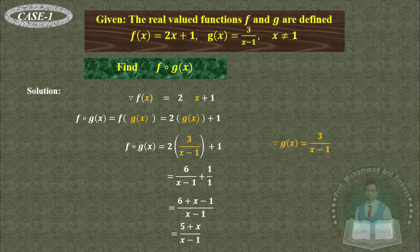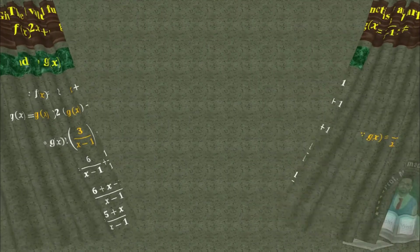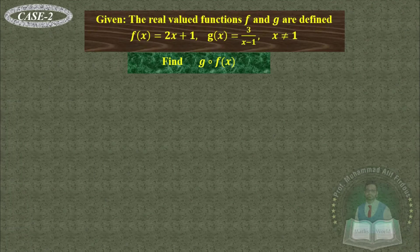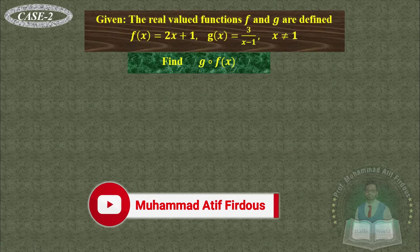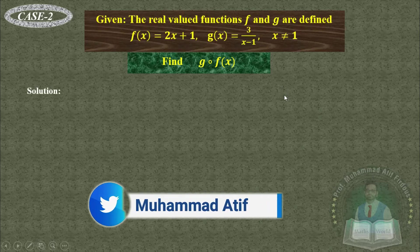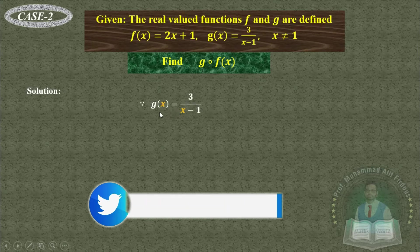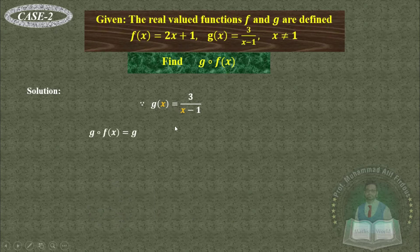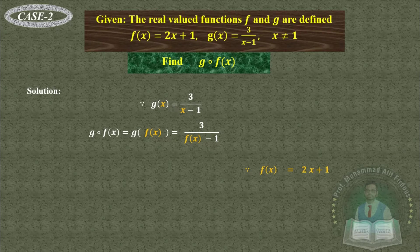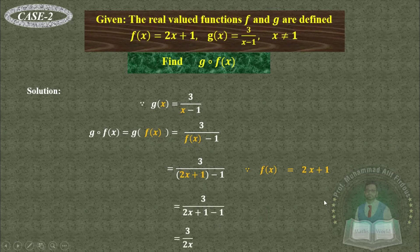Case 2: Find g(f(x)) using the same functions. The first function here is g, so write g(x) = 3/(x - 1) and replace x by f(x). Substituting f(x) = 2x + 1, we get 3/(2x + 1 - 1) = 3/(2x).